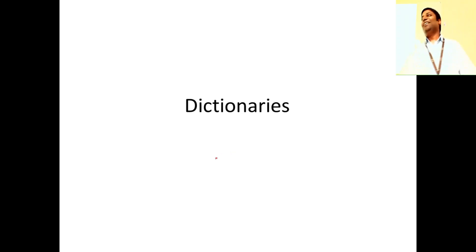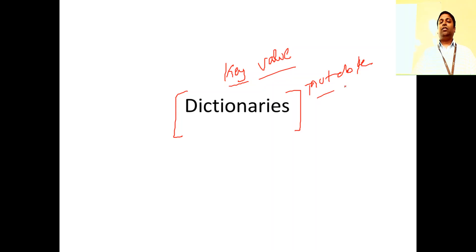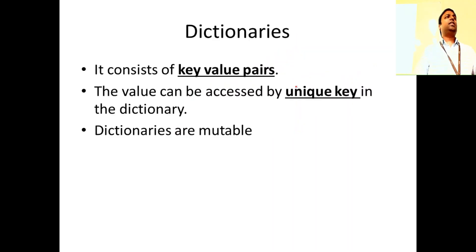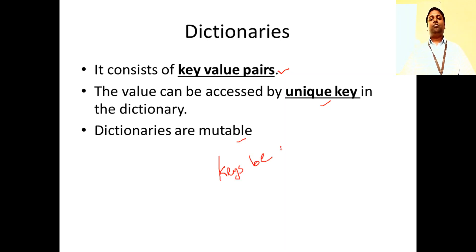When you say a dictionary in Python, you should remember it consists of a key-value pair — you have a key and a value. That is the concept behind dictionaries. Dictionaries are mutable, meaning you can add elements and delete key-value pairs. Can keys be mutable in a dictionary? Can a list be a key?